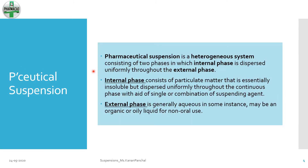A pharmaceutical suspension is a heterogeneous system consisting of two phases, in which the internal phase is dispersed uniformly throughout the external phase. The internal phase consists of a solid particulate matter that is usually insoluble in the dispersion medium, but is dispersed uniformly throughout the external phase by the help of certain excipients — the important one being a suspending agent. The external phase, also known as the suspending medium or dispersion medium, is generally aqueous, but for non-oral purposes like topical or ophthalmic, it can also be oily in nature.